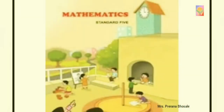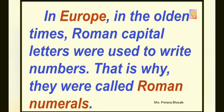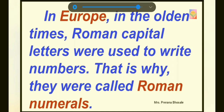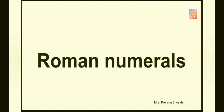You have already learned about Devanagari numerals and international numerals. Now let's learn something new. Look at this clock. This clock does not have numbers. Can you guess what these symbols are called? Yes, they are Roman numerals. In Europe, in the olden times, Roman capital letters were used to write numbers. That is why they were called Roman numerals. In this video, you are going to learn about Roman numerals.